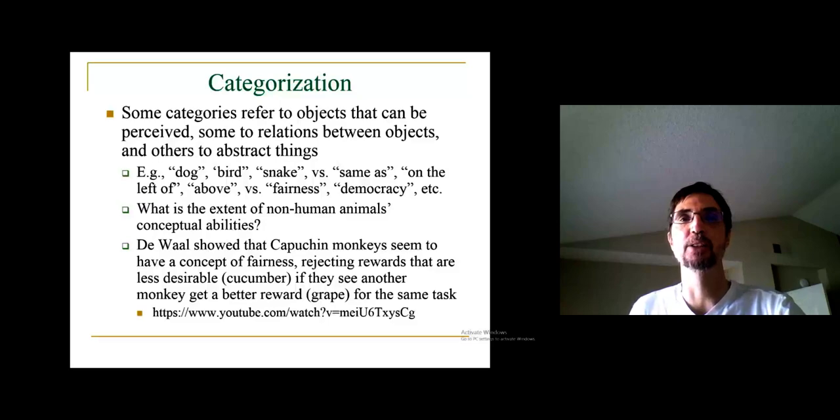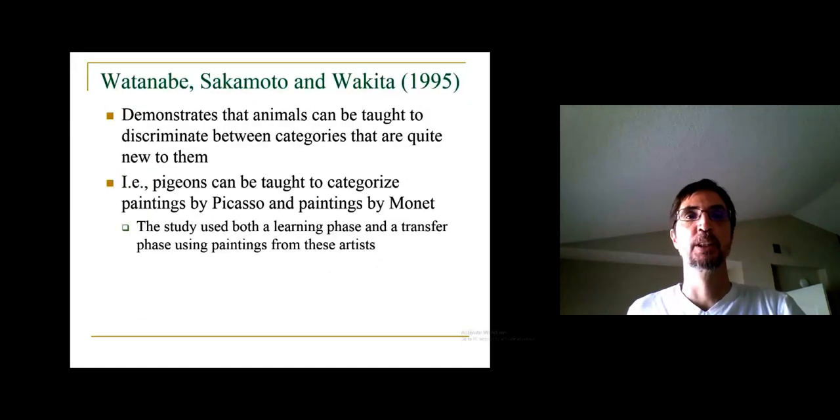So one of the questions that animal cognition researchers have is: what is the extent of animals' conceptual abilities? How abstract can they go as far as what they can represent in terms of categories? Just as an aside here, De Waal showed that capuchin monkeys seem to have a concept of fairness. He argues that on the basis of his experiments, where he showed that when you have two capuchin monkeys that can see each other, when one receives a certain reward for doing something and the other one receives a lesser reward for doing the same thing, that other monkey will get extremely upset and will even throw the reward at the experimenter.